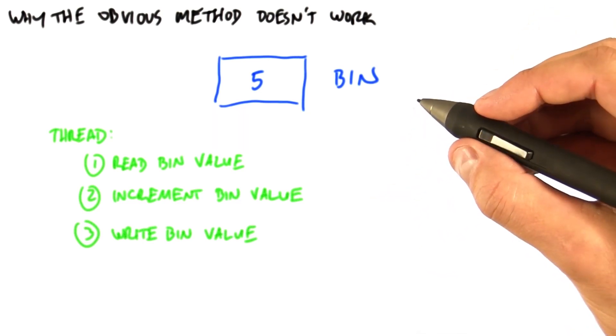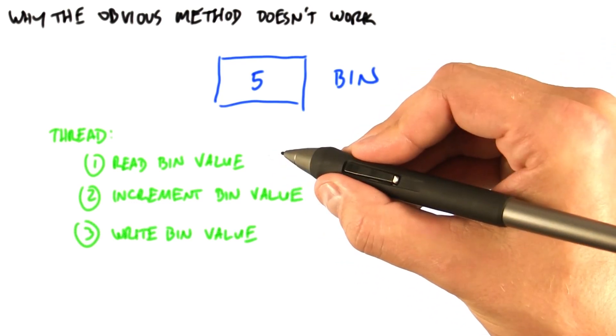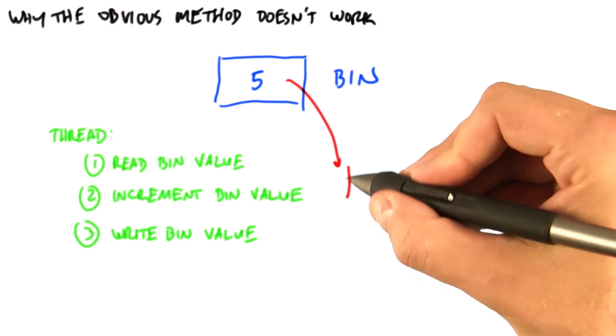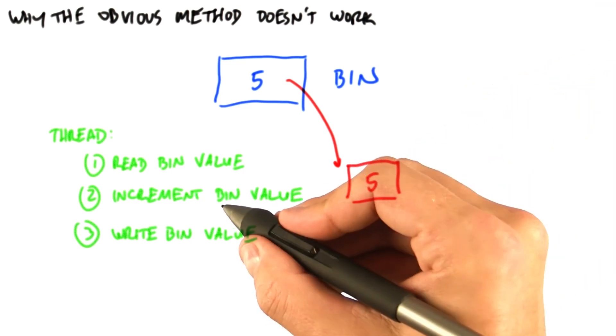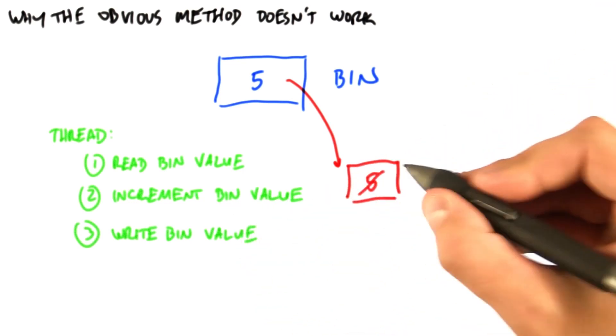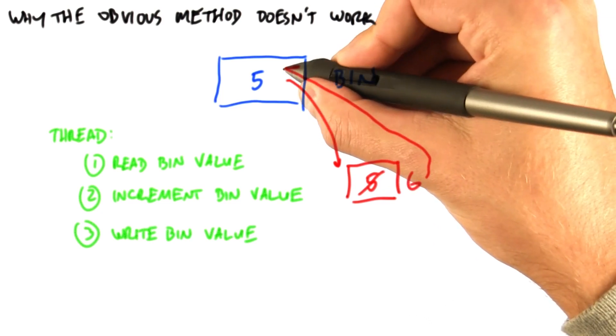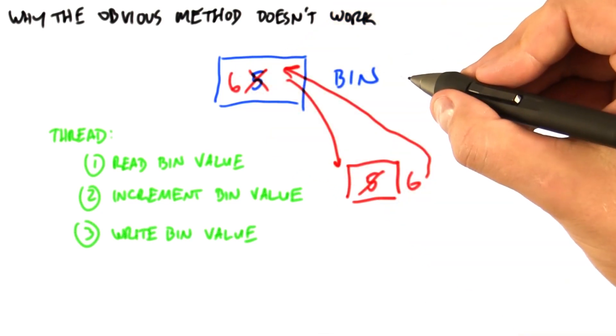The first operation is doing a global memory read to fetch the bin value into a register. The second is incrementing the bin value within the register. And the third is storing the incremented value back to global memory.